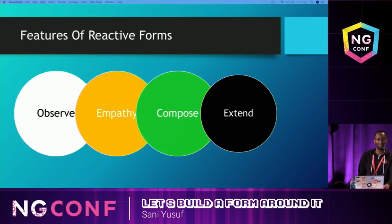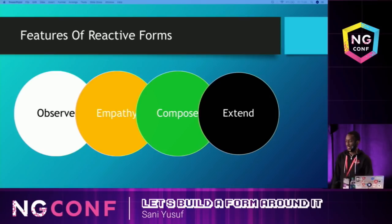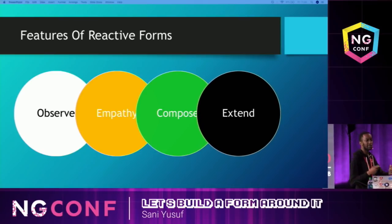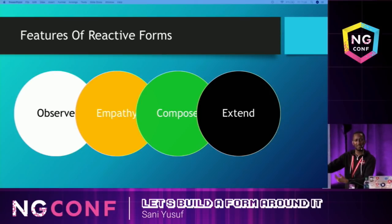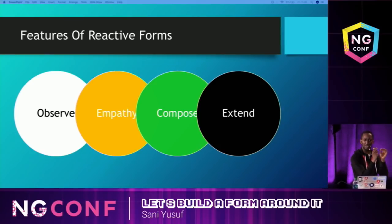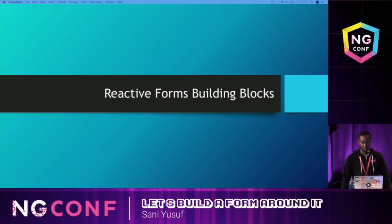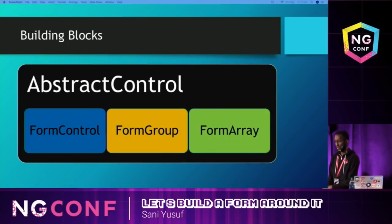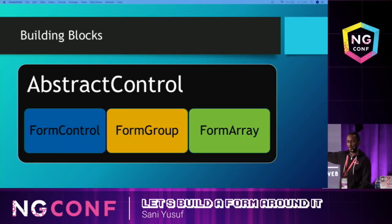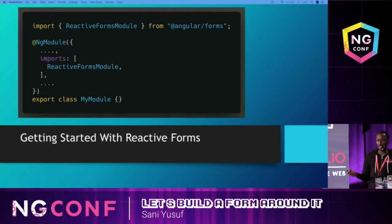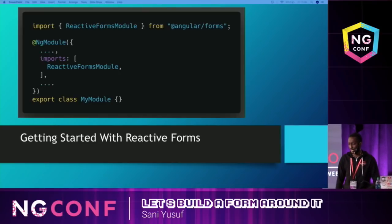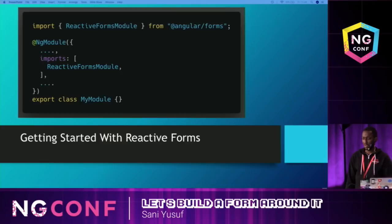They should be extendable. Sometimes what HTML gives you is not enough, so you need to extend with custom logic — your own forms. Think of things like Ionic, where they have ion-textarea and ion-input because you need specific things. Reactive form building blocks: everything inherits from the abstract control base class. You have the FormControl, the FormGroup, and the FormArray. To get started with reactive forms, you just import the ReactiveFormsModule from Angular forms, put it in your imports block, and you're good to go.